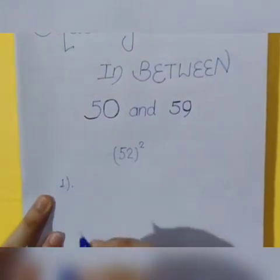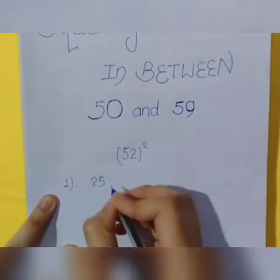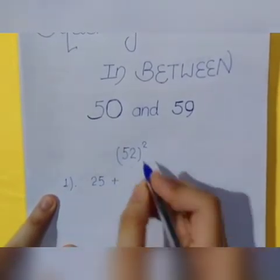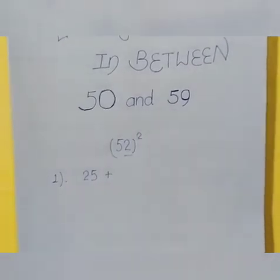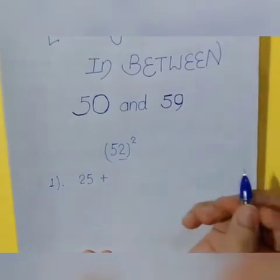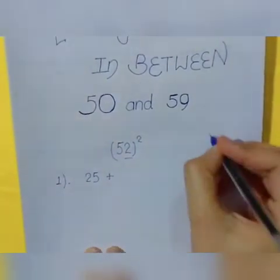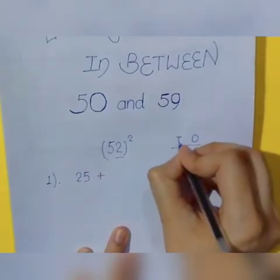The first step is to keep 25 as a fixed number and add the number in the ones place. So let's see, the number in the ones is present. In the last video, I taught you about the ones and the tens. This is the ones position and this is the tens.